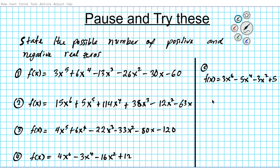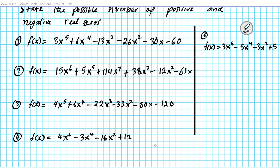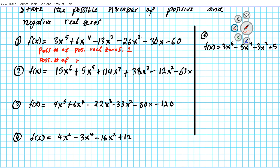Here are the five practice problems we promised. Pause the video and try all five — you're specifying the possible number of positive and negative real zeros. When done, click play to see the correct answers. For problem one: the possible number of positive real zeros is 1, with one sign variation for f(x). The possible number of negative real zeros is 4, 2, or 0.